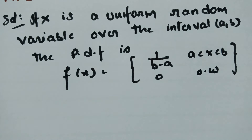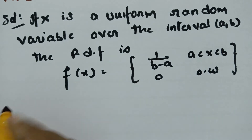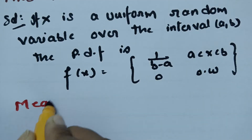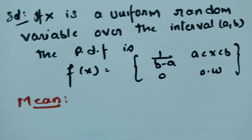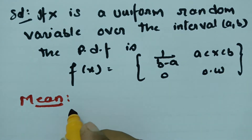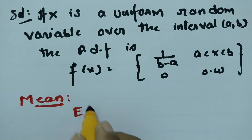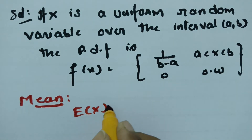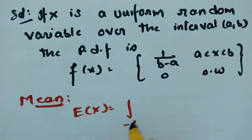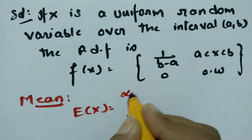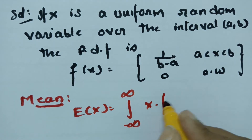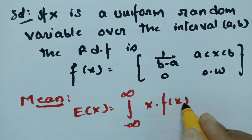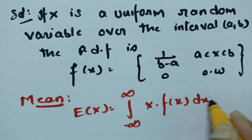Now we have to find the mean of the uniform distribution. The mean E(x) is equal to the integral from minus infinity to plus infinity of x times f(x) dx.